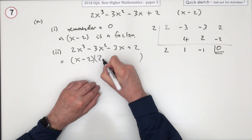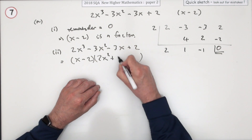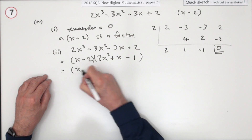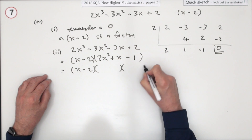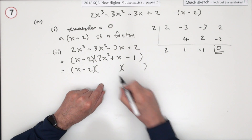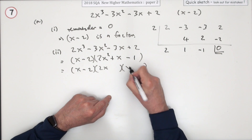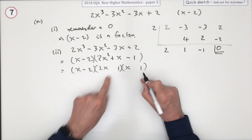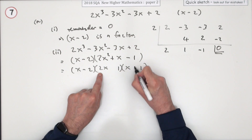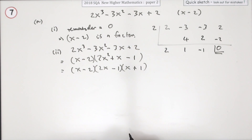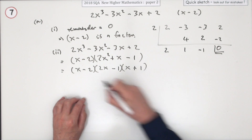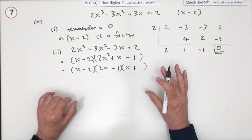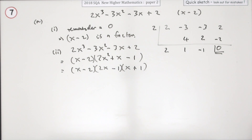The 2 is the x-squared coefficient, the 1 is the coefficient of x, and the negative 1 is the constant at the end. Presuming it factorises fully, 2x squared can only come from 2x times x, and 1 can only come from 1 times 1. If the middle term is positive, the larger one is positive and the other is negative. It's not equal to 0, so you don't put x equals anything at this stage.